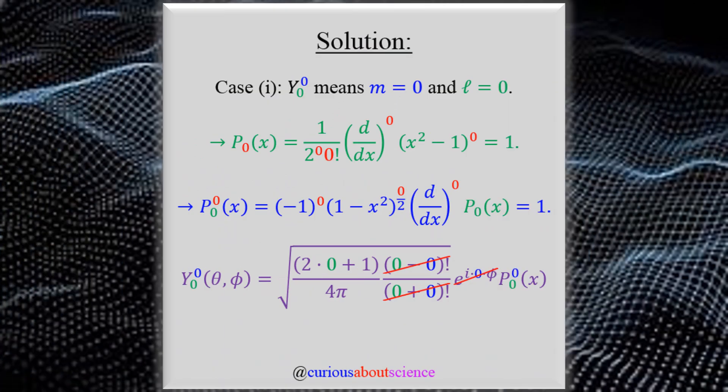To start off, we have case 1 here, where we were asked to find the angular function for 0,0. The top end of C means that we want M equals 0, and the bottom subscript means that we want L equals 0.